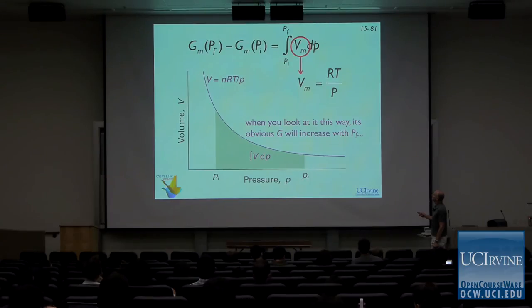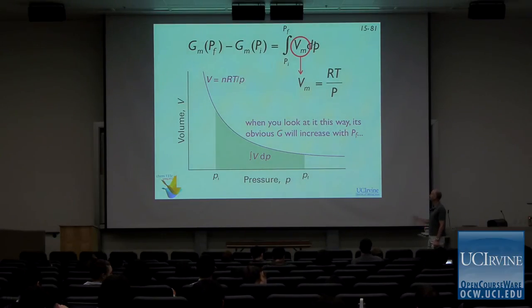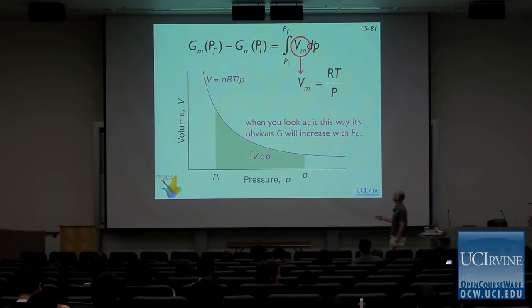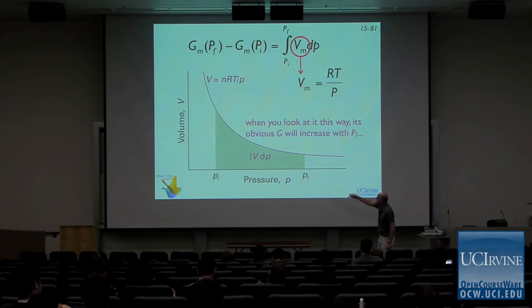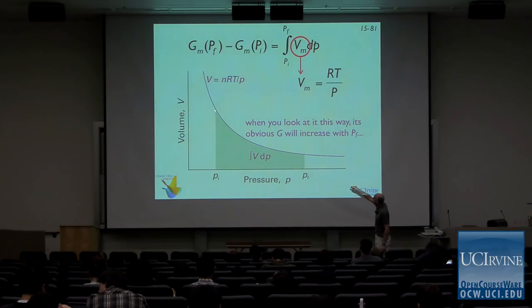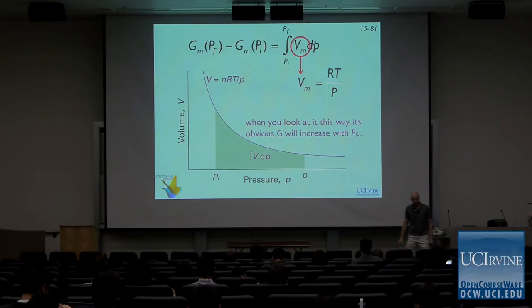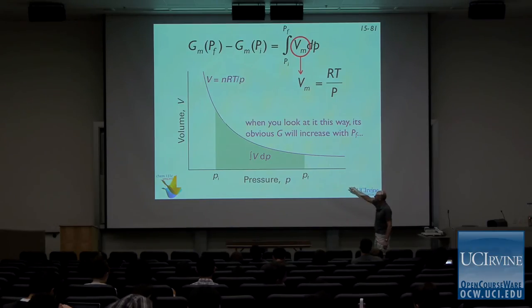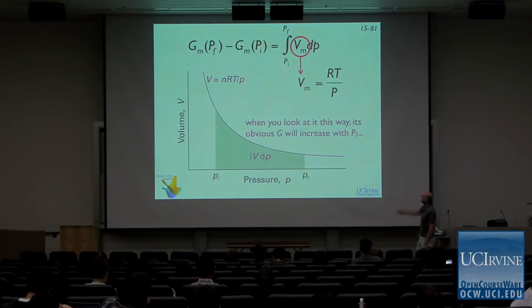What this is showing is the volume as a function of pressure for an ideal gas — it's following this curve. If we want to evaluate the integral, we're integrating from some initial pressure to some final pressure; this is the area underneath the curve and that is the Gibbs energy. As we make P final higher and higher, this integral gets bigger, so obviously the Gibbs energy goes up, just based on that.